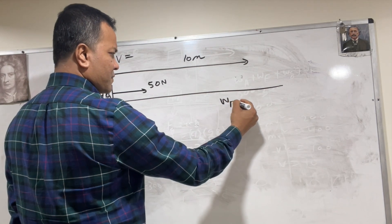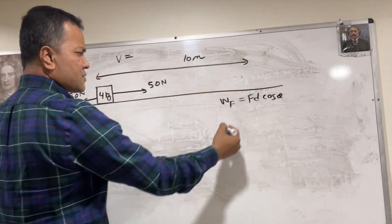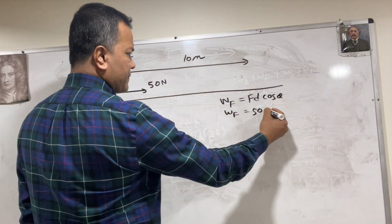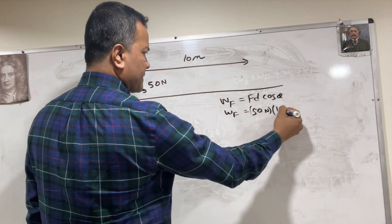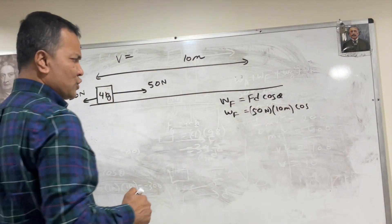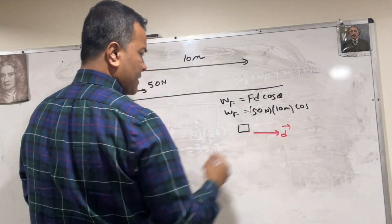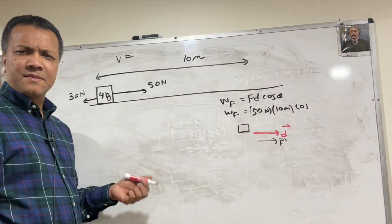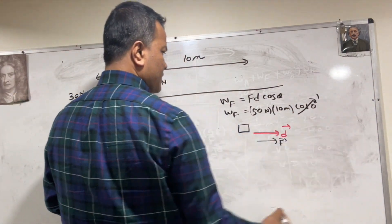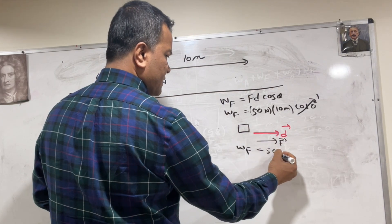Work done by applied force. Work is F times d times cosine theta. So F is 50 Newton and d is 10 meters. Now for cosine theta, you have to draw a diagram. The box is moving — the displacement vector and the force vector are in the same direction, so theta is 0 degrees. Cosine 0 degrees is 1. So W equals 500 joules.